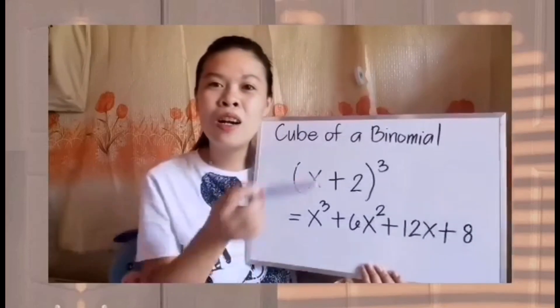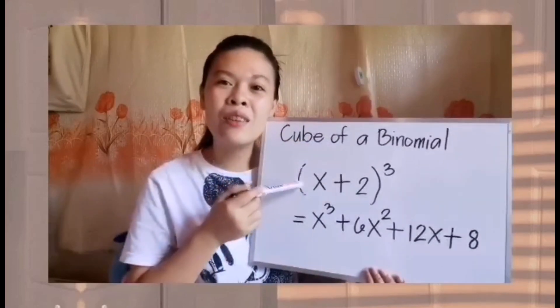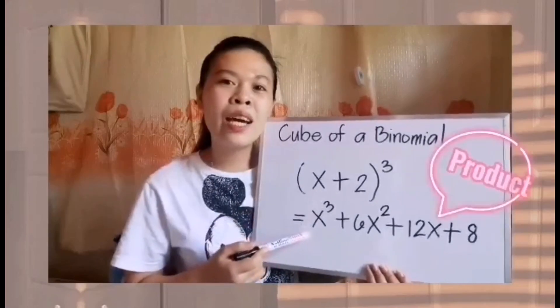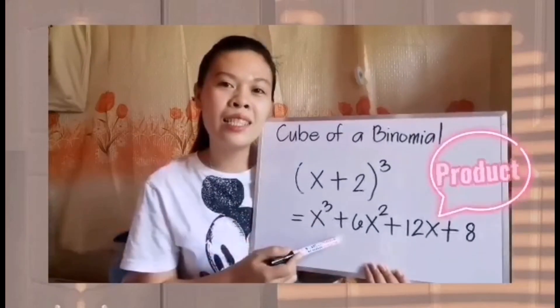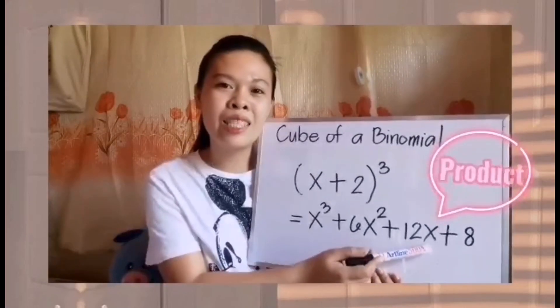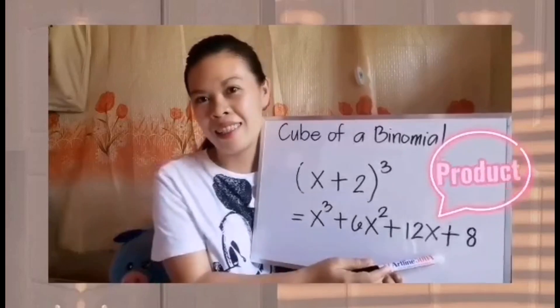Therefore, for the cube of the quantity of x plus 2, it is equal to x cubed plus 6x squared plus 12x plus 8.